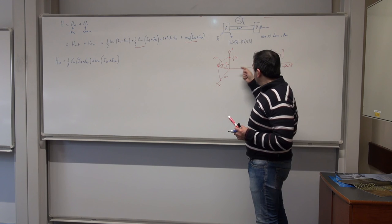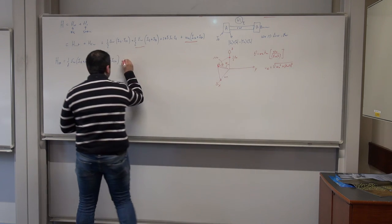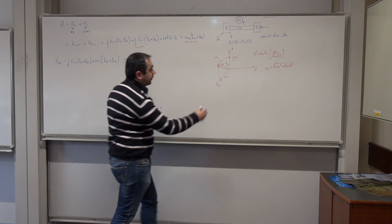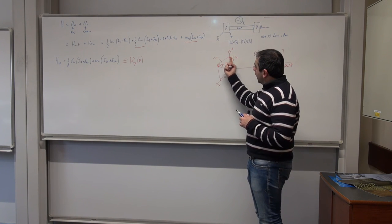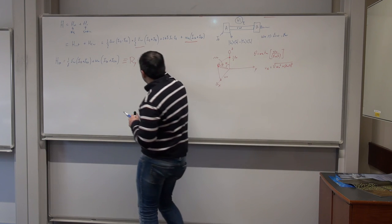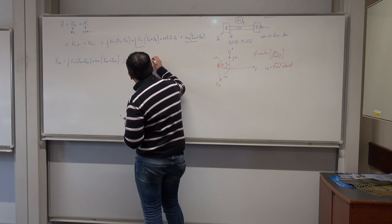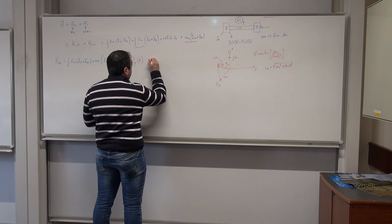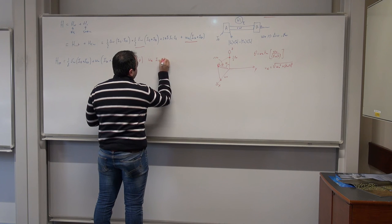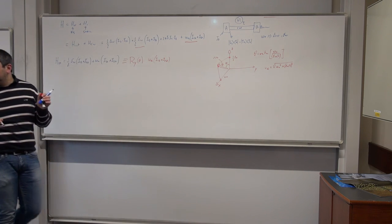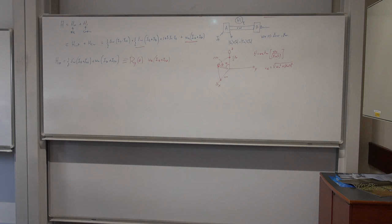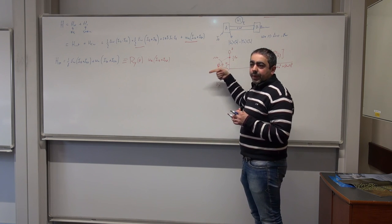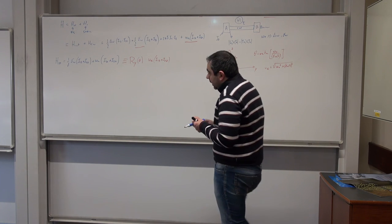Now we apply first-order Average Hamiltonian Theory to the small residual Hamiltonian in the interaction frame. We find the first-order average Hamiltonian is: one-half of delta omega times cosine(theta) times R_y(theta) applied to (I1z minus I2z), plus the J coupling term 2J (I1 dot I2). Because we irradiate in the middle of the two resonances, sigma omega is zero at the irradiation frequency, so theta equals 90 degrees and cosine(90) equals zero. All the chemical shift terms vanish, leaving only the J coupling term.